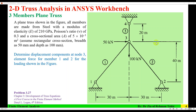Hello everyone, Dr. Zia Tahir here. This video tutorial is about 2D analysis of a three-member plane truss in ANSYS Workbench. The plane truss is shown in the figure, and all members are made from steel with a modulus of elasticity of 210 GPa and a Poisson's ratio of 0.3.